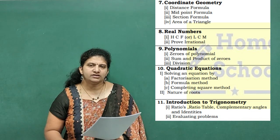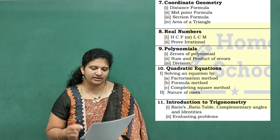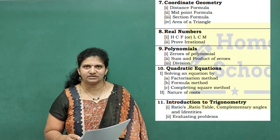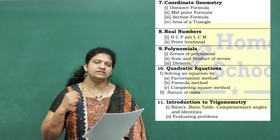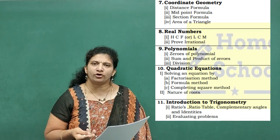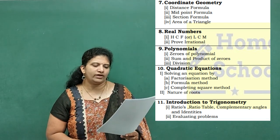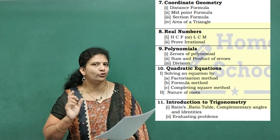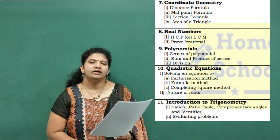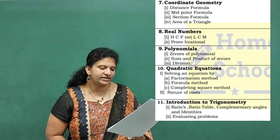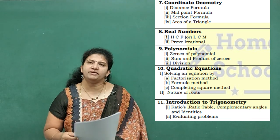Ninth chapter — Polynomials: zeroes of a polynomial, sum and product of polynomials, or division of polynomials. You may get division of a polynomial for three marks, finding zeroes for two marks, or framing a polynomial given sum and product. Minimum two marks I'll take here. Coming to the next chapter — Quadratic Equations: solving by factorization method, formula method, and completing the square method.